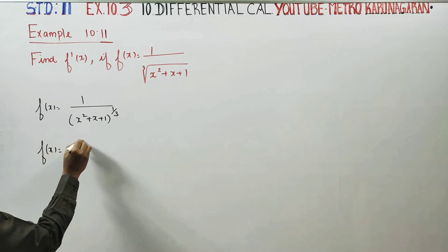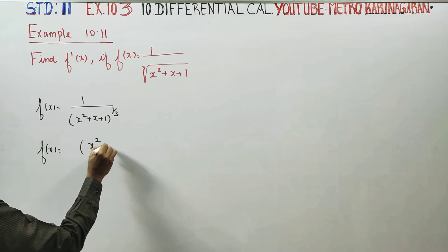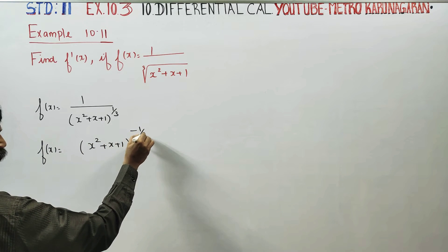I will start the differentiation. f of x is equal to x square plus x plus 1 whole power minus 1 by 3.